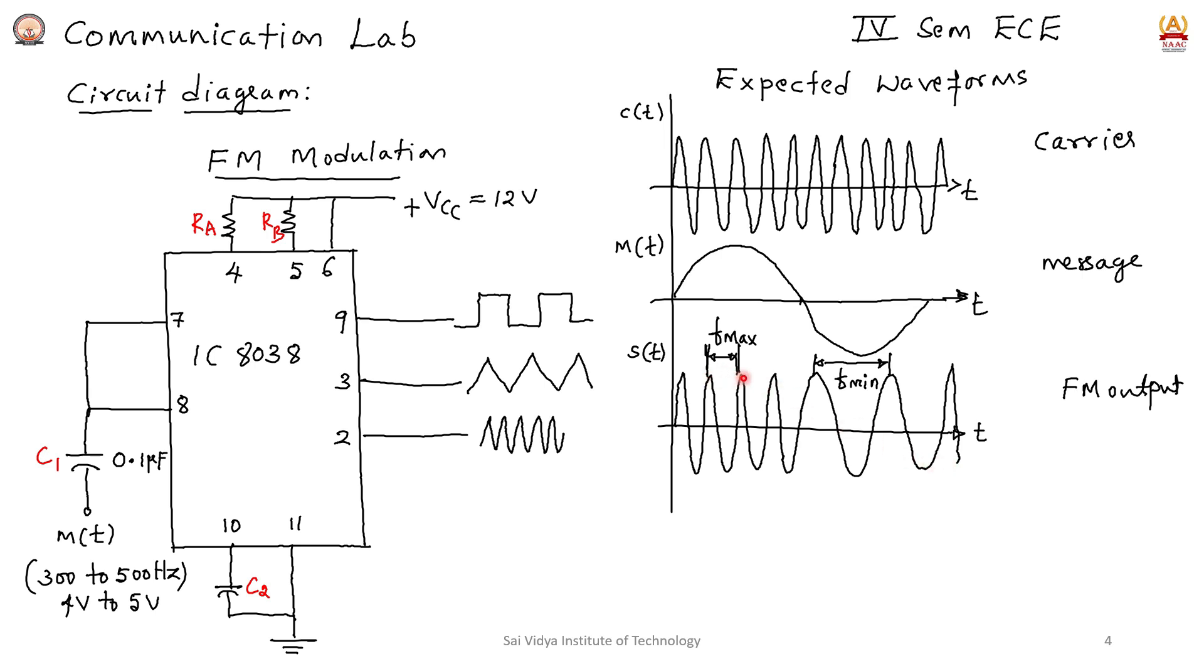We observe the value on the x-axis between two peaks. Between two peaks of higher frequency gives F maximum. Calculate the number of divisions on the x-axis between two peaks of lower frequency and multiply by time per division to get F minimum.